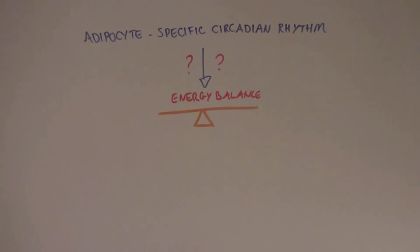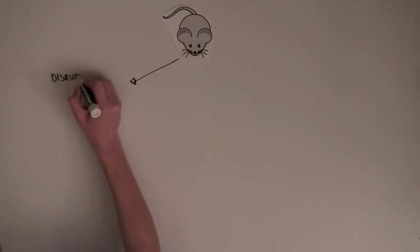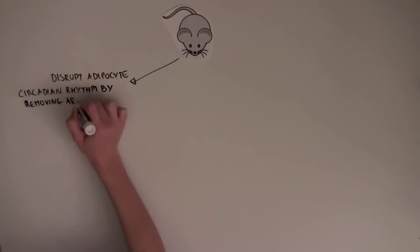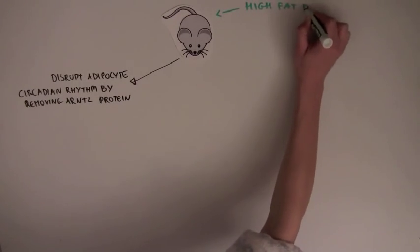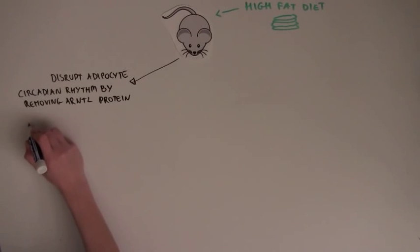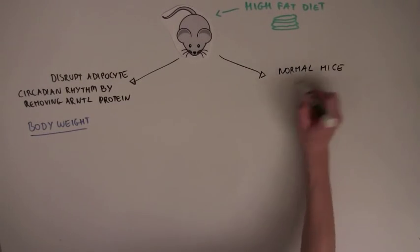To do this, the scientists used the mouse. They disrupted only the adipocyte circadian rhythm by genetically removing a protein called arntal, only in adipocytes. They next fed mice a high-fat diet, and looked at the mice's body weight, compared to normal mice, with an intact circadian rhythm.